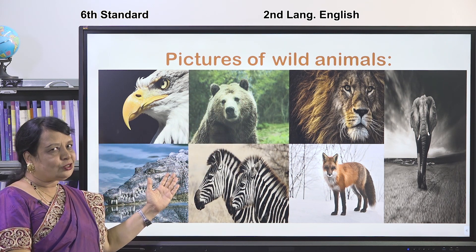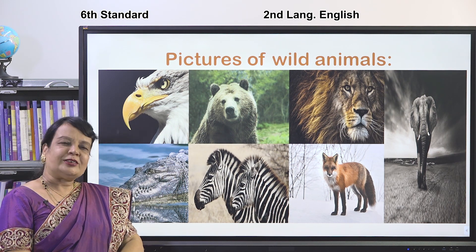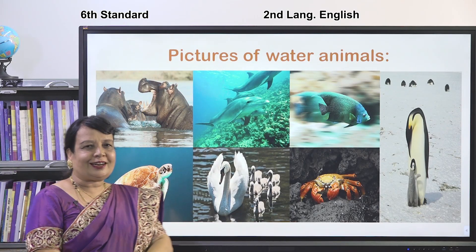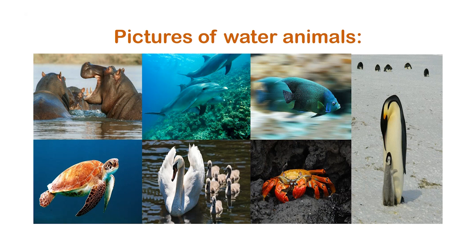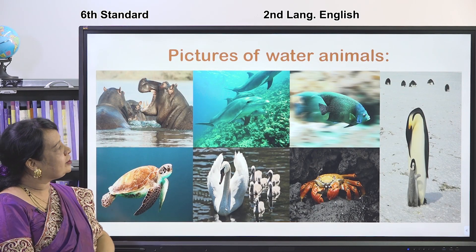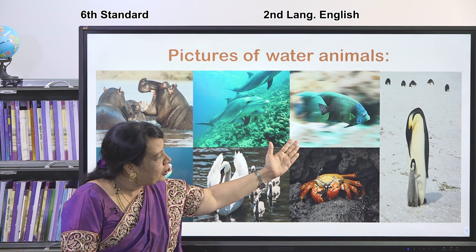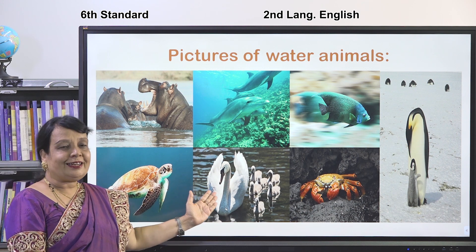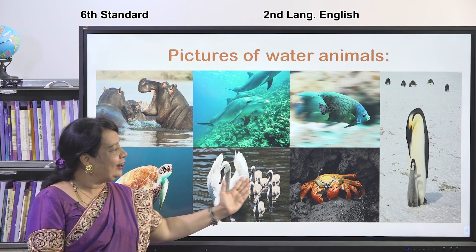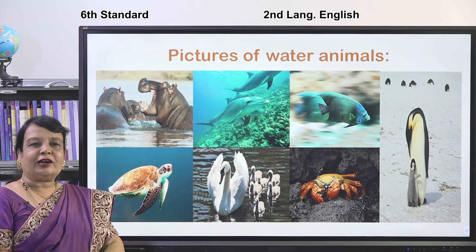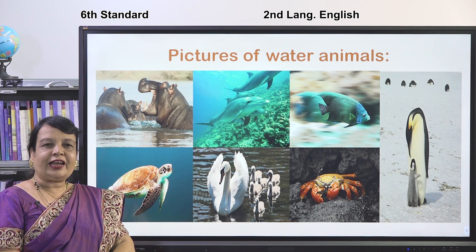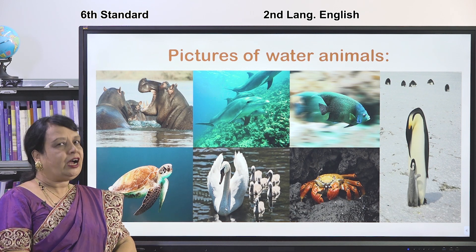You can also collect pictures of wild animals and domestic animals. I have a few more animals for you — pictures of water animals: hippopotamus, dolphin, fish, penguin, turtle, swan, and crab. Some animals live both in water and on land — they are called amphibians.